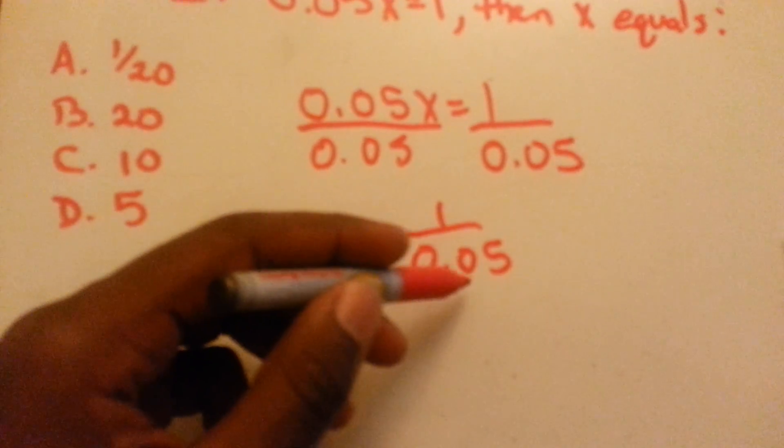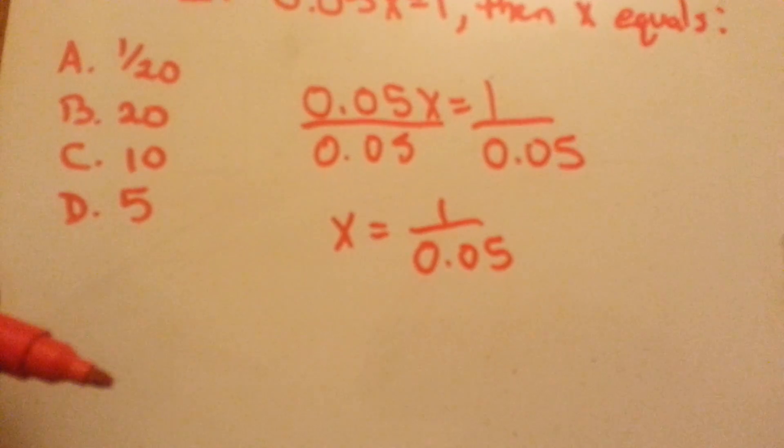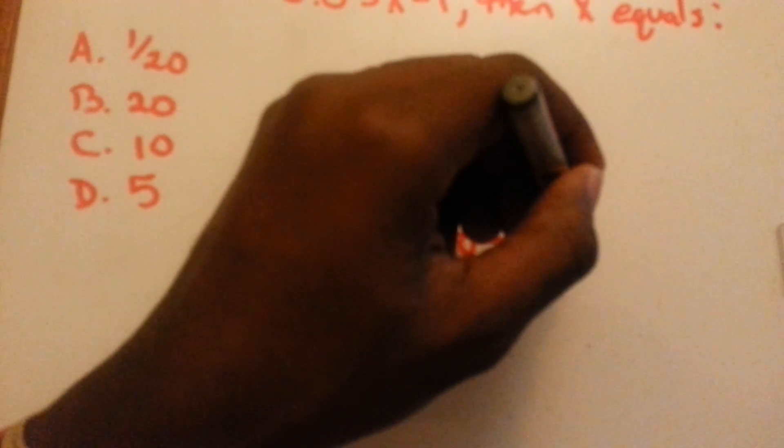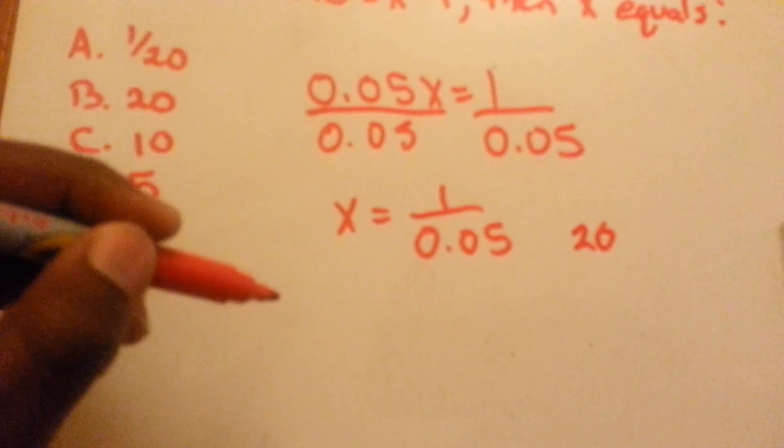and 0.05 to me just means a nickel. So how many nickels are in $1? I just know that's 20.